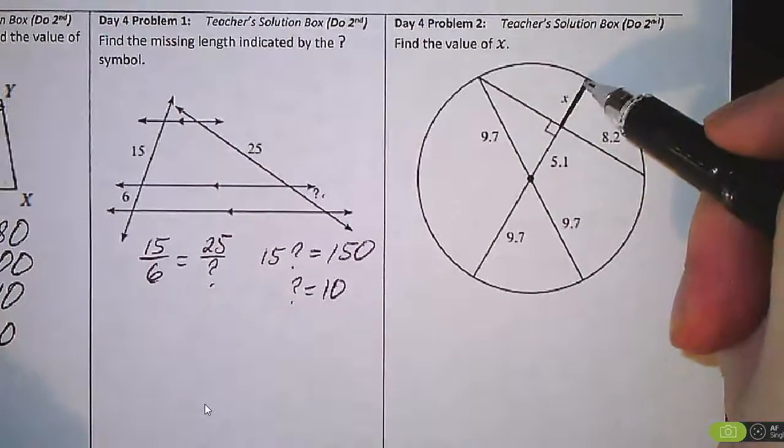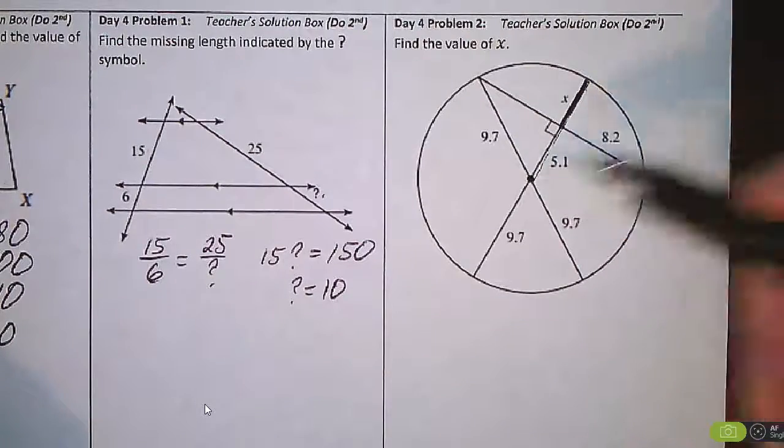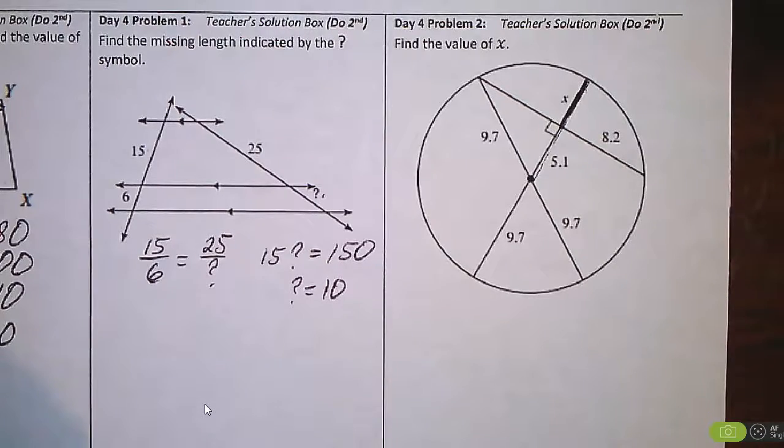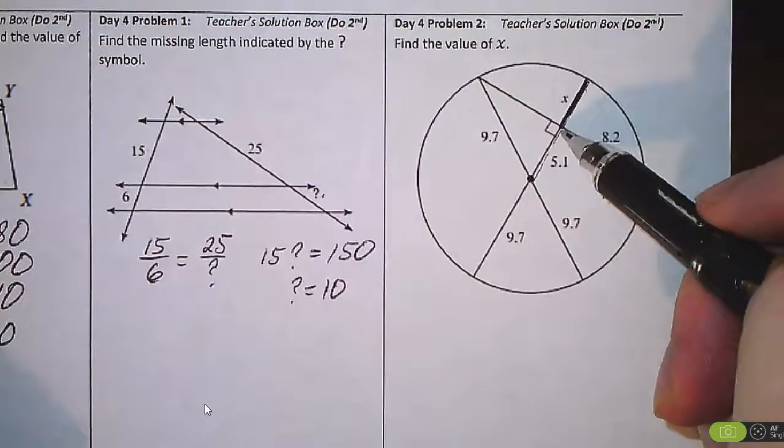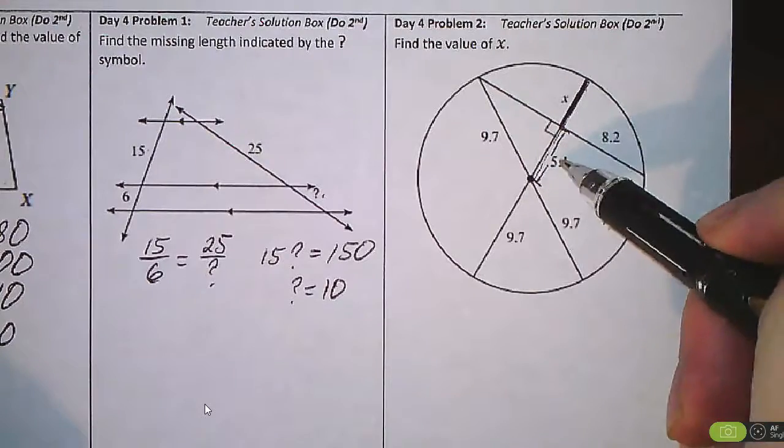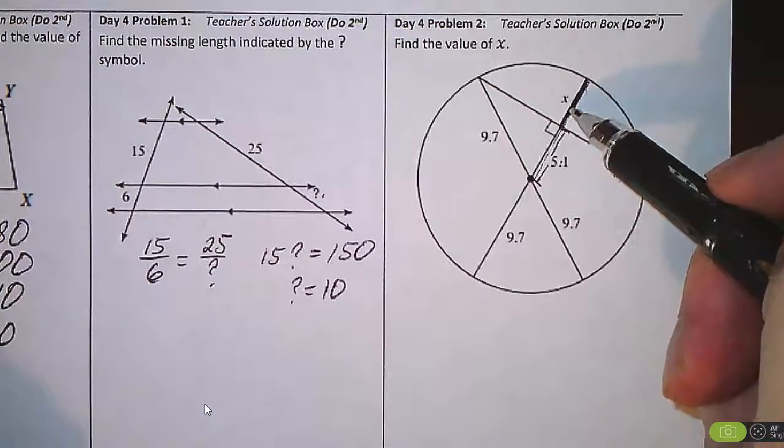I notice that this is a portion of the radius of the circle. So if we can find the radius, we can then subtract away this distance, which is 5.1, and that will get us the length for x.